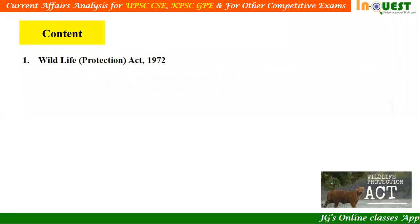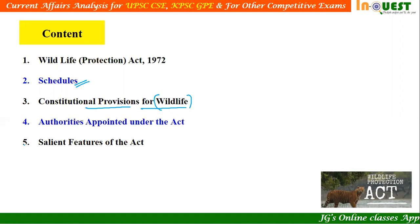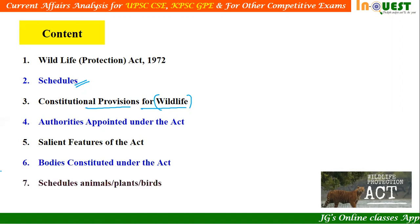Let's see the contents of today's discussion. Number one, what is Wildlife Protection Act 1972? Under this act, there are six schedules we need to understand with complete details. Next, we need to understand the constitutional provisions for wildlife, including various amendments and articles related to wildlife. Next, the authorities appointed under this act, the salient features, the bodies constituted under the act, and finally, the list of animals, plants, and birds put under different schedules.